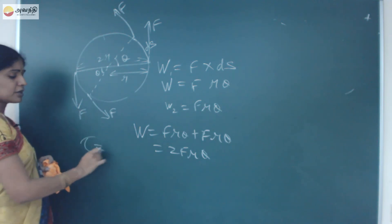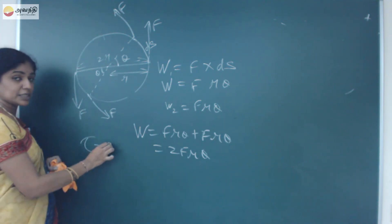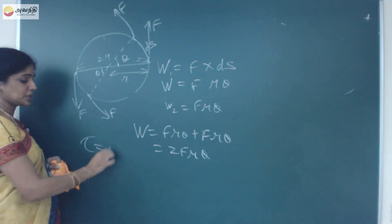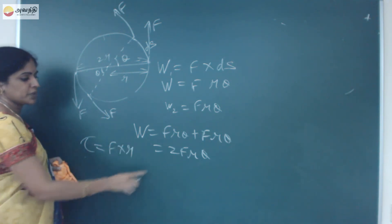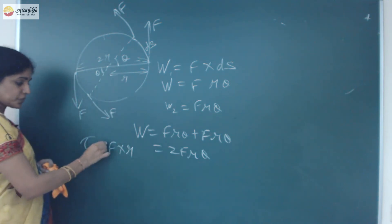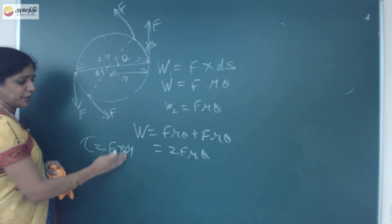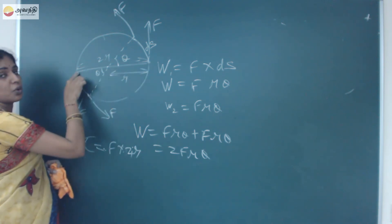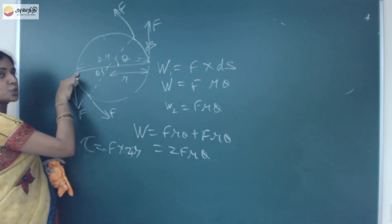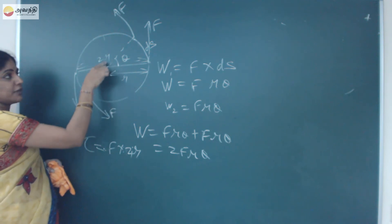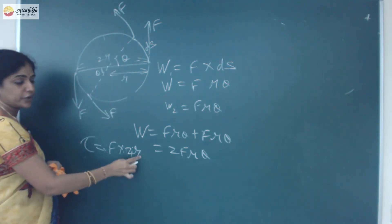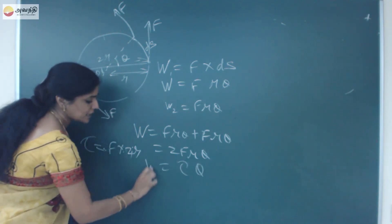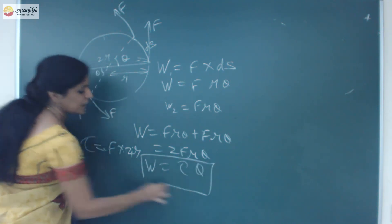We know torque is given by force into perpendicular distance. Here the perpendicular distance is 2R (the diameter), so torque is equal to F into 2R. Therefore, work done equals torque (tau) into theta. So, work done by a couple equals tau into theta.